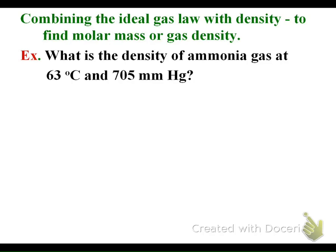Here's an example problem. What's the density of ammonia gas at 63 degrees Celsius and 705 millimeters of mercury? We're going to write out PV=nRT first. We've got to solve for volume first. We know our pressure is 705 millimeters of mercury. Right away you should be thinking that's not in the right units. I need to divide by 760 to get it into atmospheres.